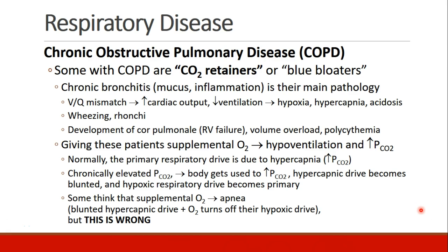When we talk about COPD, these patients are often classified into two general classifications: the pink puffers and the blue bloaters. The blue bloaters are also called CO2 retainers. Their main manifestation of COPD is chronic bronchitis with all of its mucus production and inflammation, leading to VQ mismatch, increased cardiac output, and decreased ventilation. These patients present with hypoxia, hypercapnia, and acidosis. On exam, we expect wheezing and sometimes rhonchi. They develop cor pulmonale, which is right ventricular failure, leading to volume overload, and hypoxia can lead to polycythemia — an increased red blood cell count.